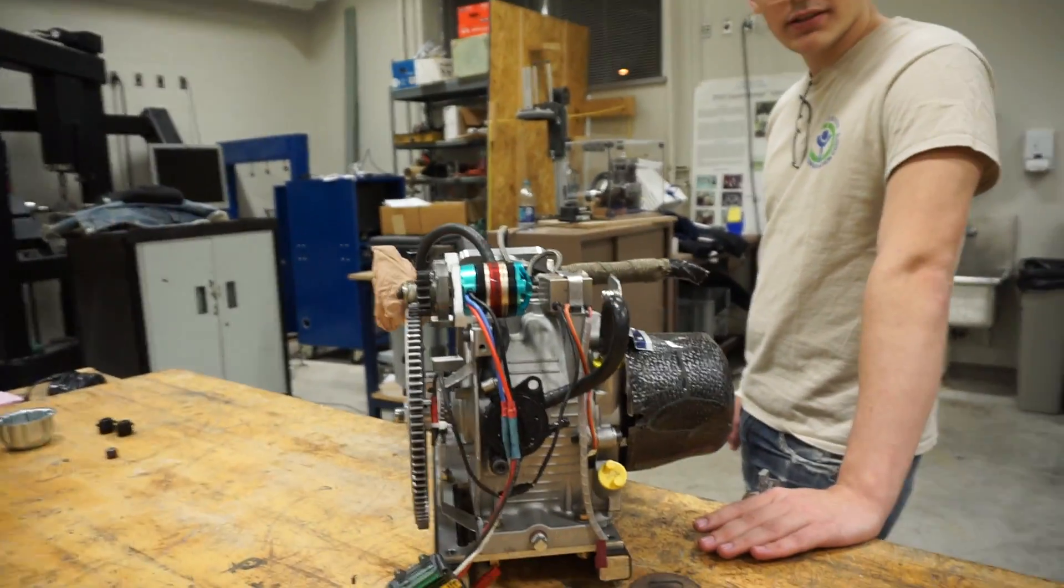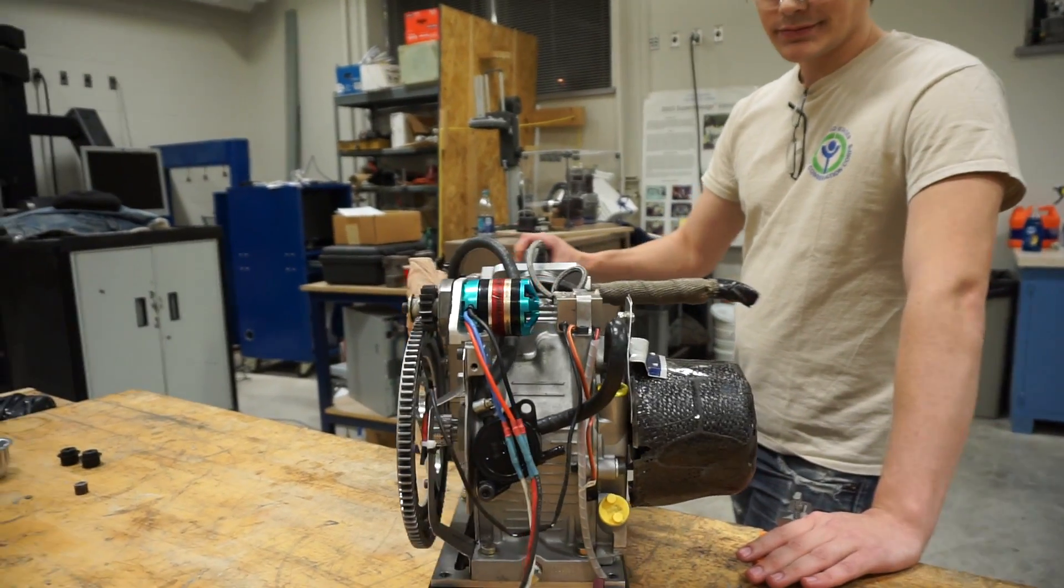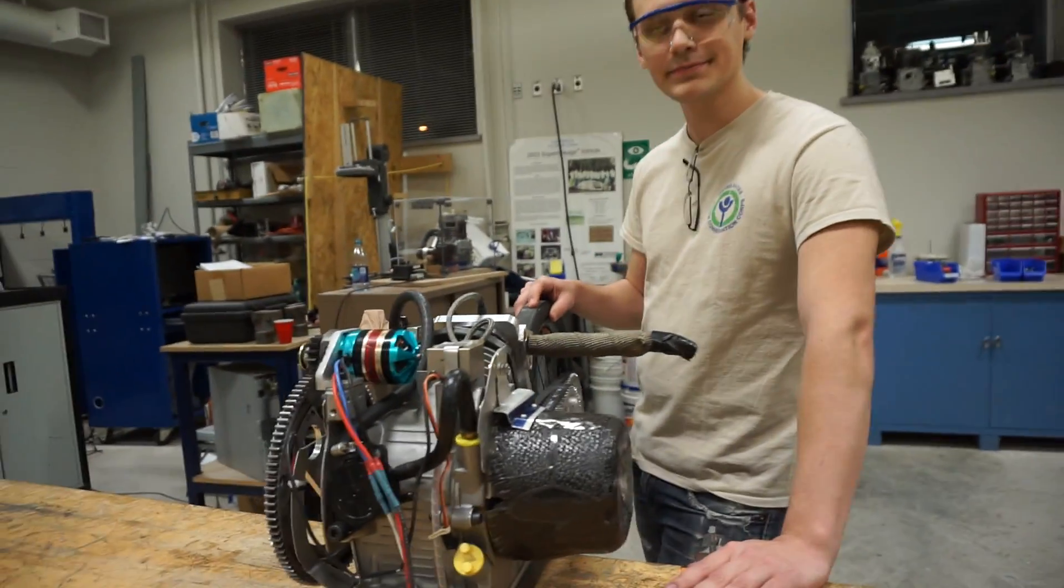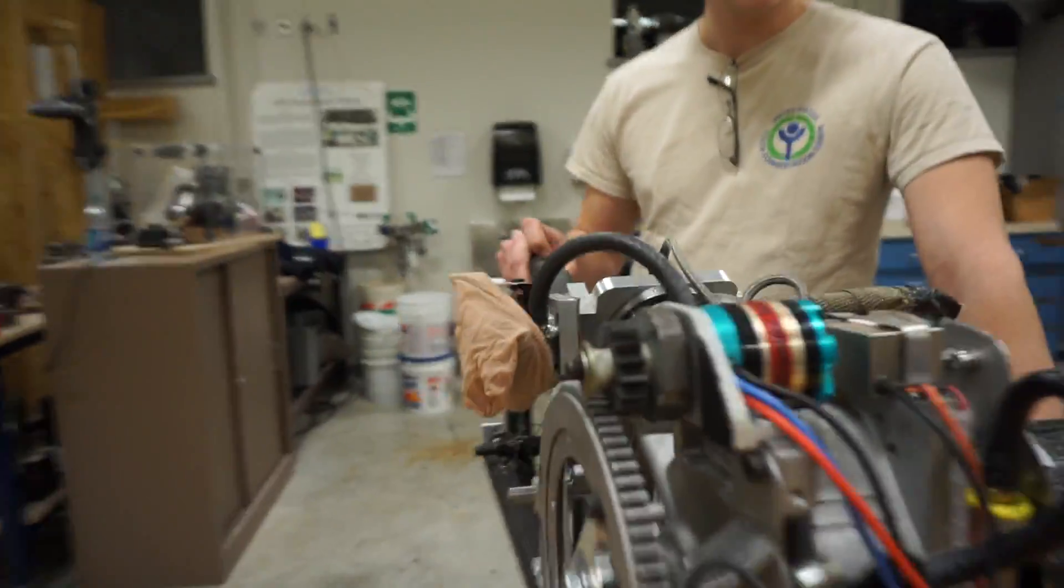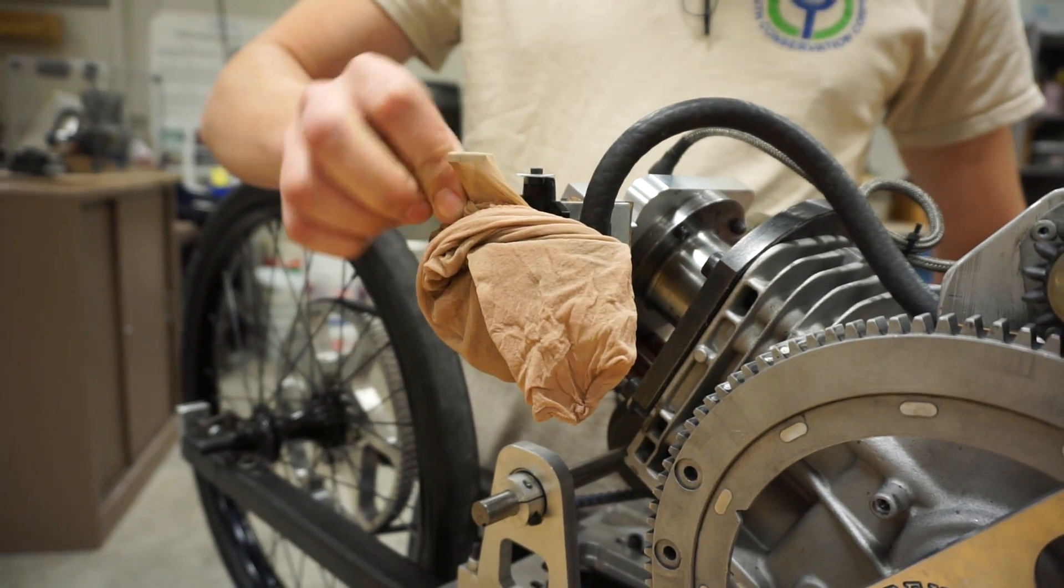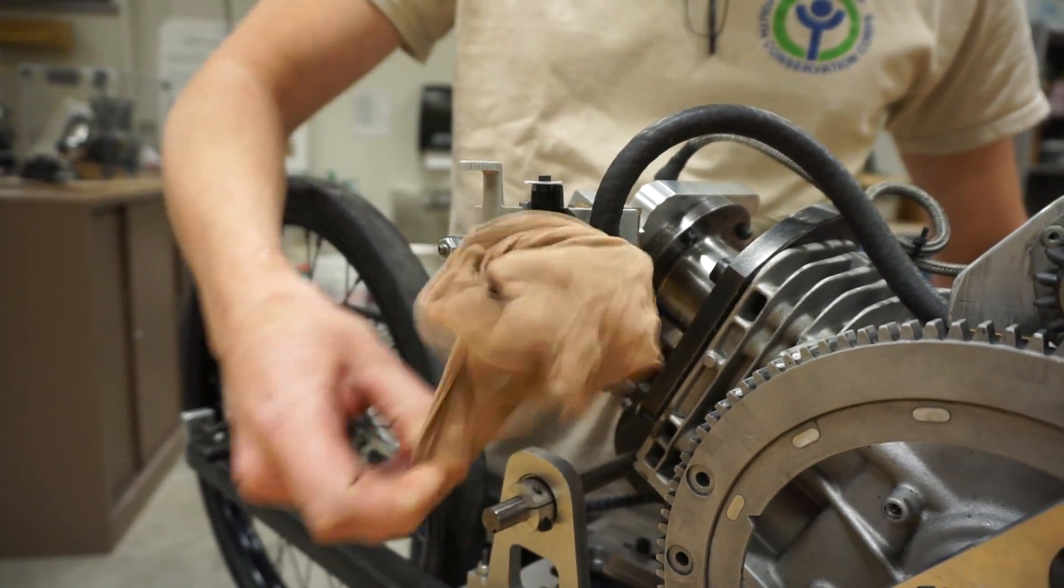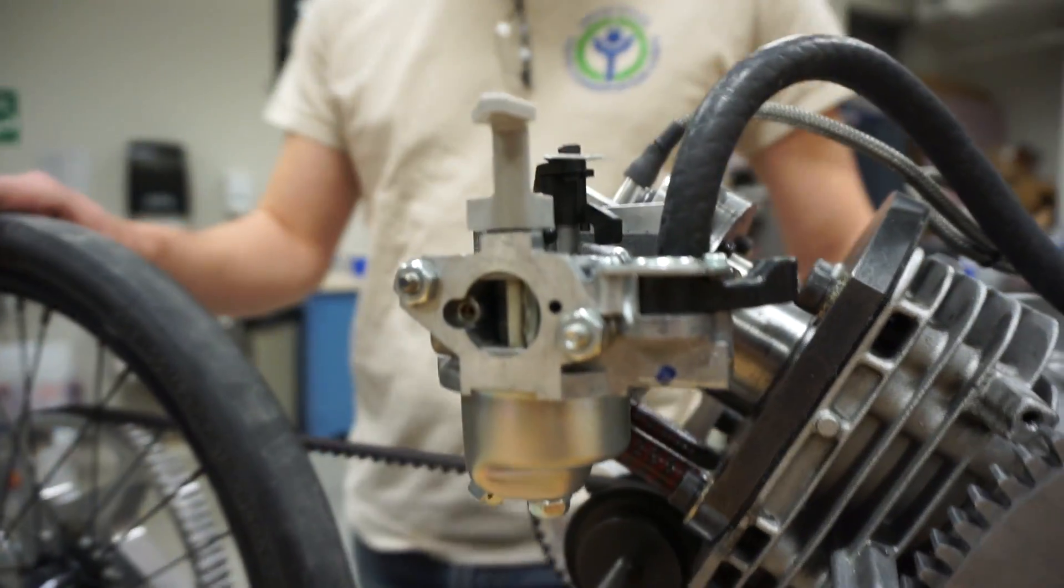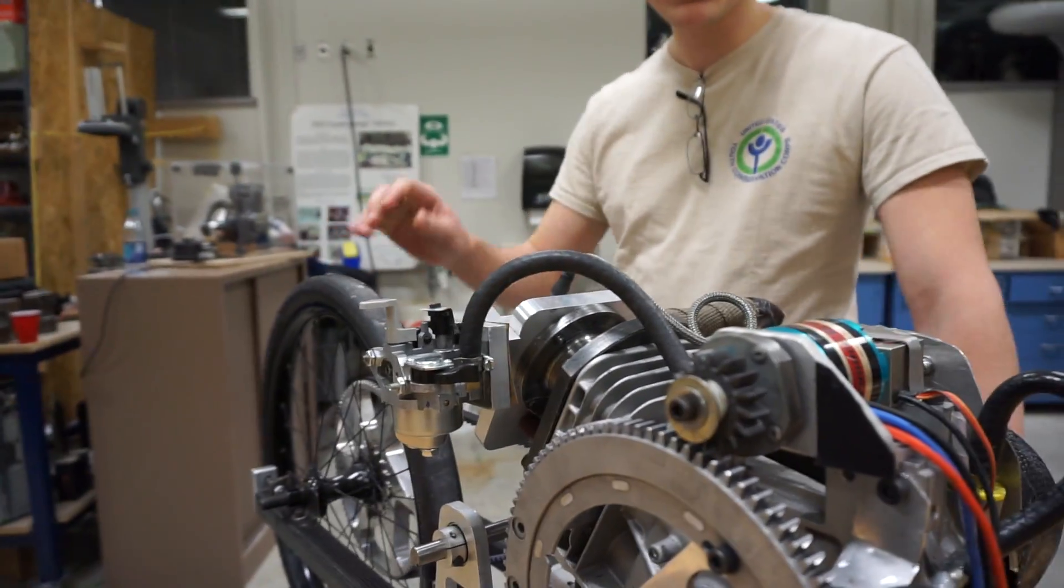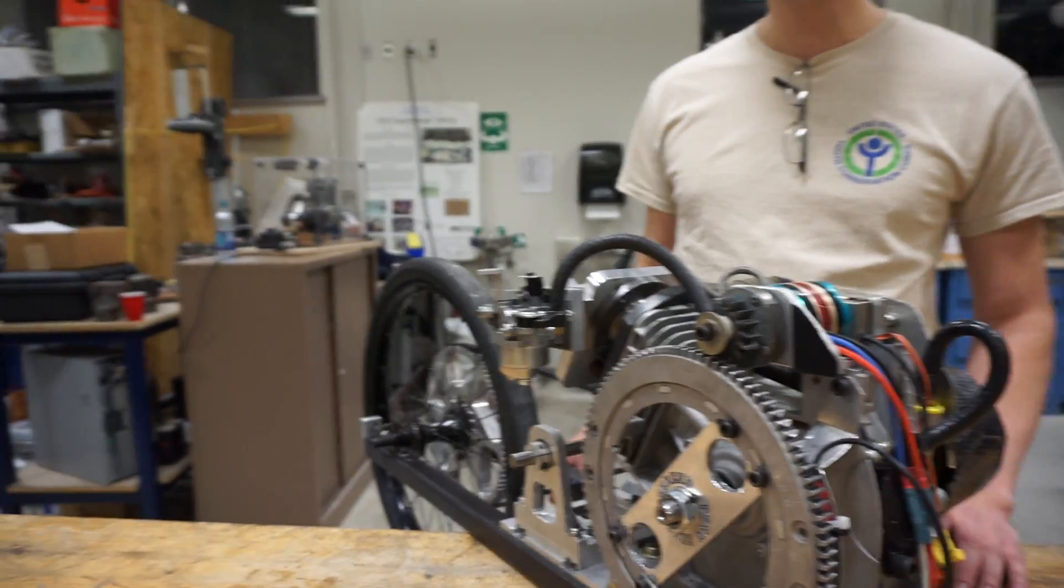And what we're doing on the dyno right now is actually testing an electronic fuel injection right now, right? Because we're hoping that'll... Because right now we're just running it carbureted, right? Yep. So, if you look behind our high-quality, custom-made air filter, you can see a Honda carburetor. Just the same thing you'd get on a scooter. Interesting.